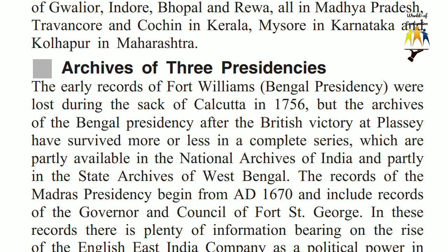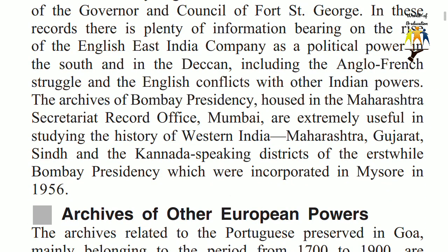Archives of Three Presidencies. The early records of Fort Williams, Bengal Presidency, were lost during the sack of Calcutta in 1756, but the archives of the Bengal Presidency after the British victory at Plassey have survived more or less in a complete series, which are partly available in the National Archives of India and partly in the State Archives of West Bengal. The records of the Madras Presidency begin from AD 1670 and include records of the Governor and Council of Fort St. George. In these records there is plenty of information bearing on the rise of the English East India Company as a political power in the South and in the Deccan, including the Anglo-French struggle and the English conflicts with other Indian powers.